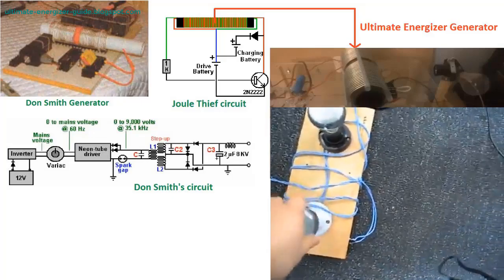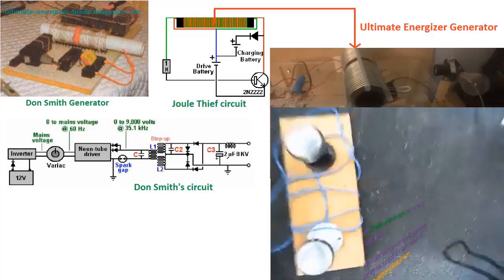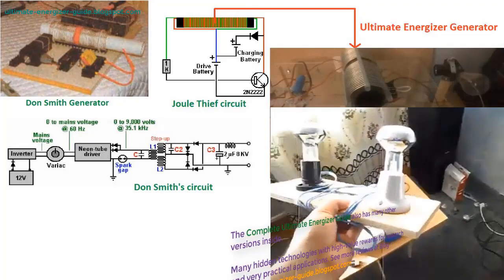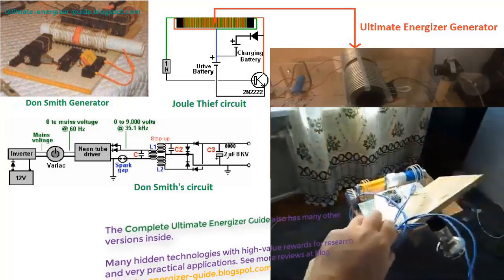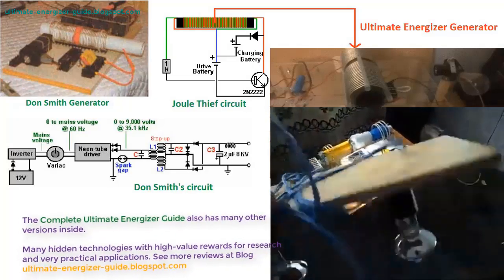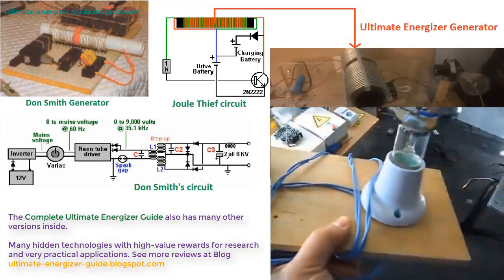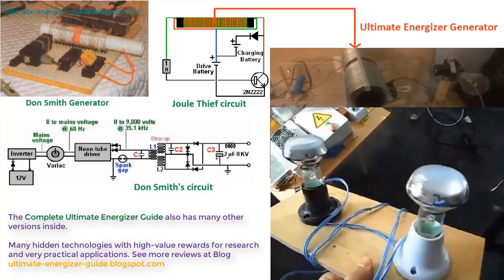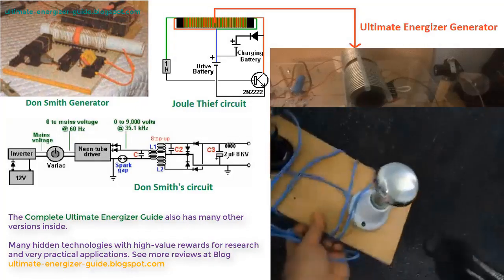The Ultimate Energizer Generator: Ultimate Energizer Guide. This technology is essentially an improvement on the Joule thief circuit and Don Smith circuit, resulting in a unique version. The deep origin of the Ultimate Energizer Generator traces back to Nikola Tesla's innovations. Tesla's invention of the bifilar coil and regulator for dynamo electrical machines is documented in the complete Ultimate Energizer Guide.